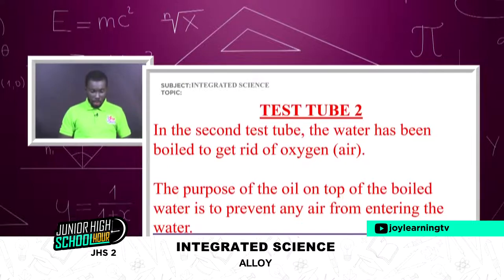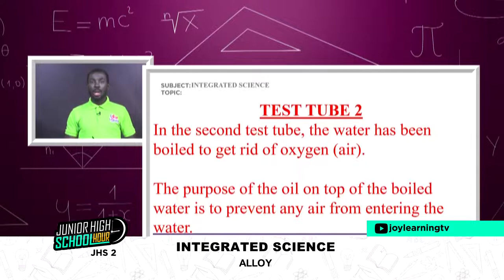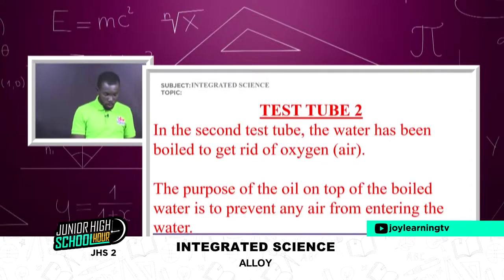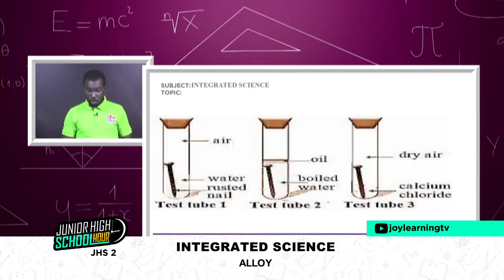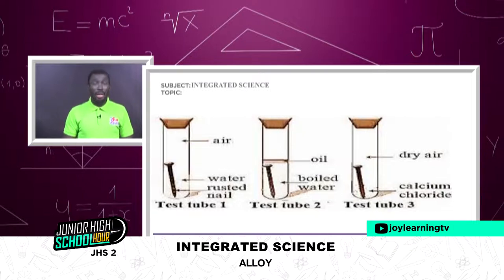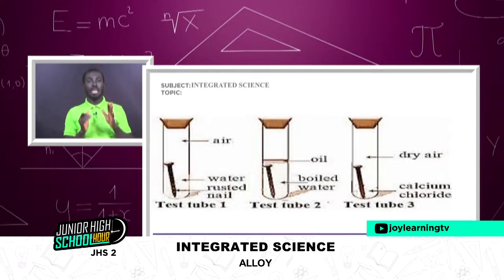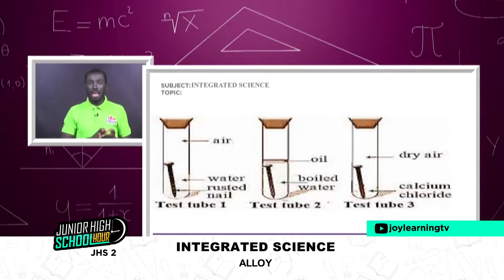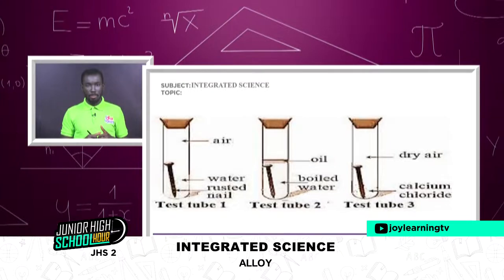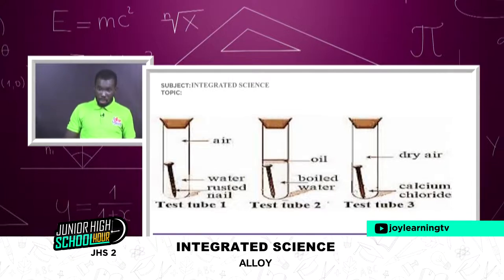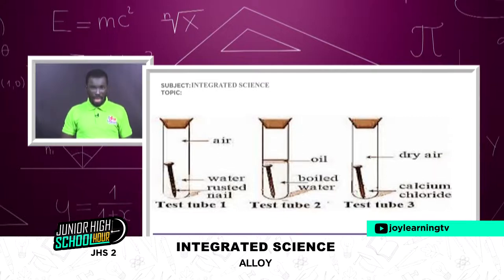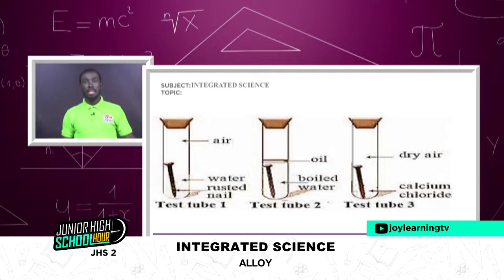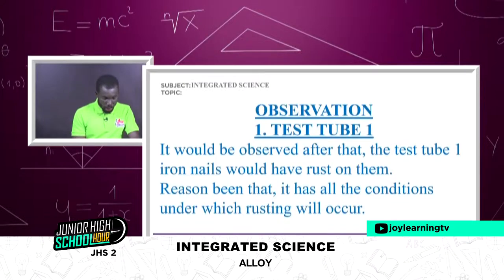In test tube two, the water was boiled to get rid of air dissolved in it, and oil on top prevents any additional air from entering. Because there is no air present, the iron nail in test tube two cannot undergo rusting — even though we have iron and water, the absence of air means no rusting occurs.